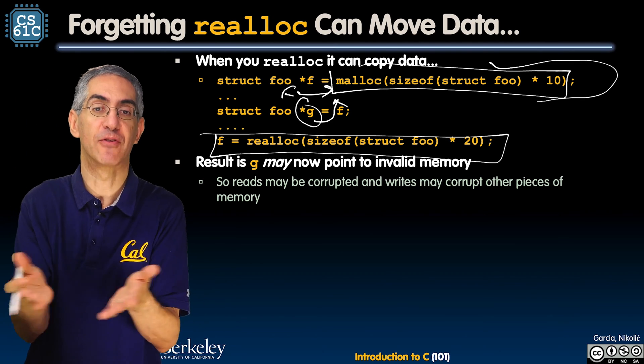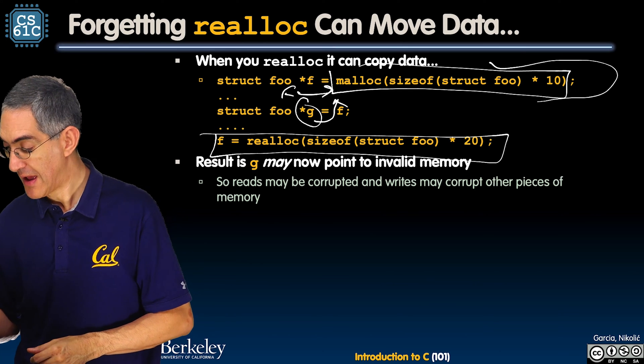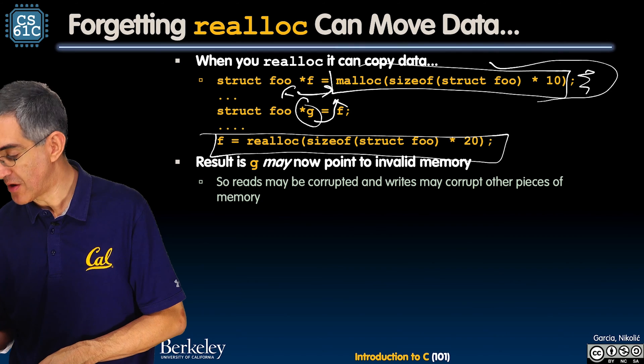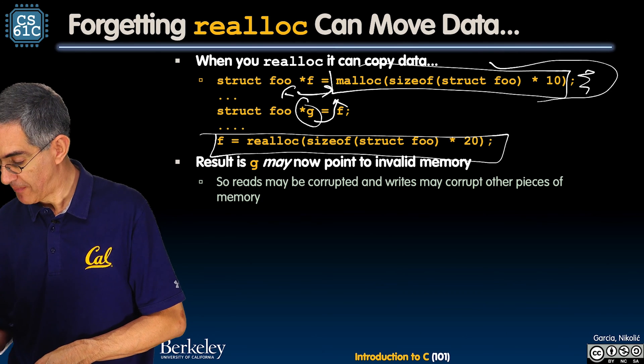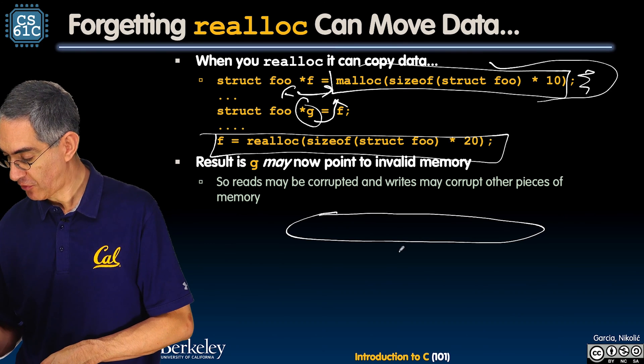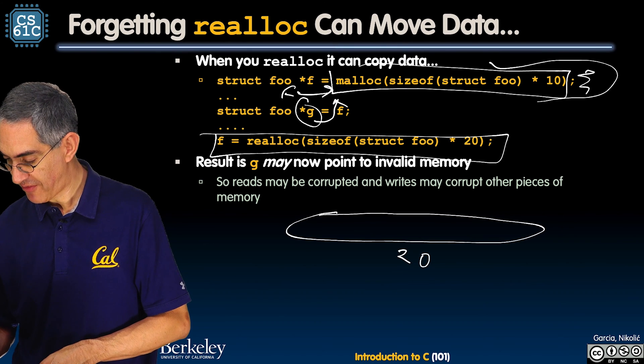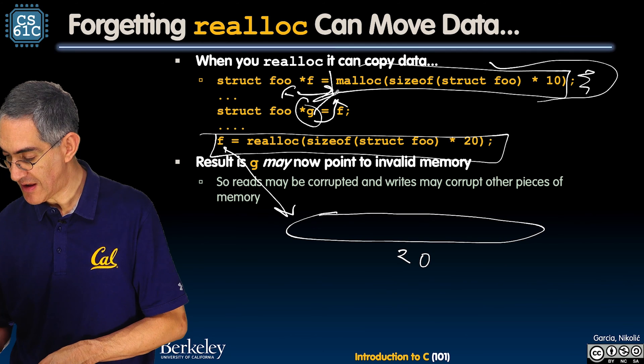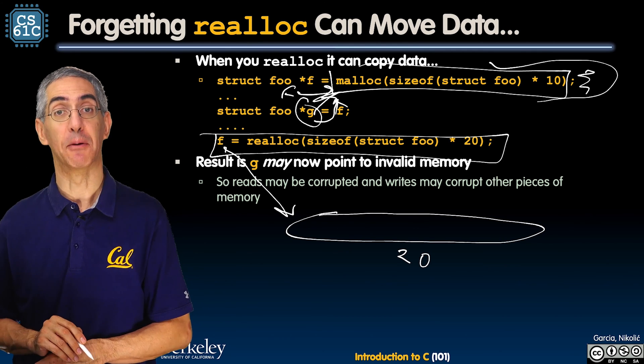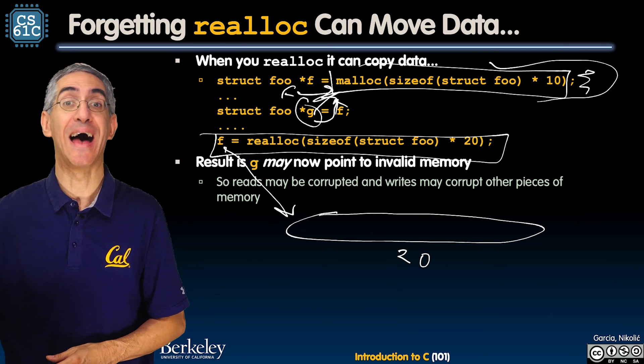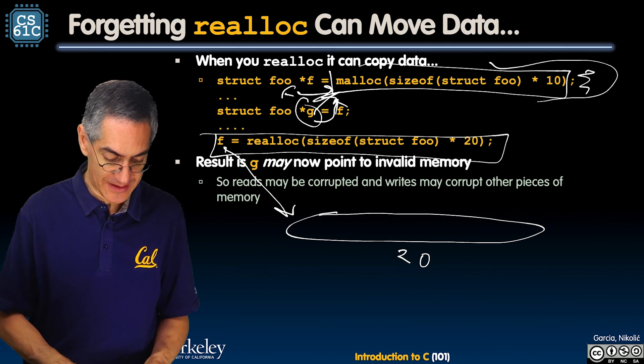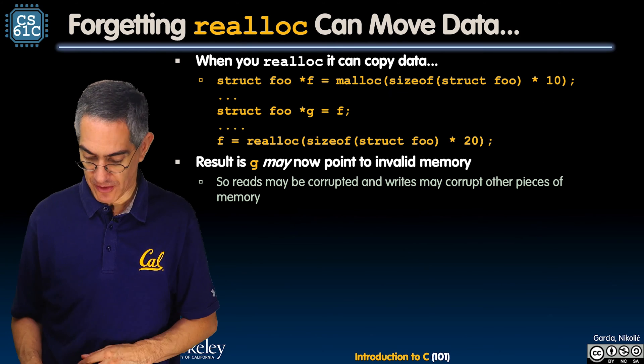Except what if realloc didn't have room? There wasn't room here. So I'd have to move it. Pick up the house and move it. So now this is 20 long. And now F is reassigned to there. But what happens? G is what we call a stale pointer. G points to the old guy. And now you're going to access G. Bad. Could be bad. Could be fine. Could be bad. You don't know. And don't do that.